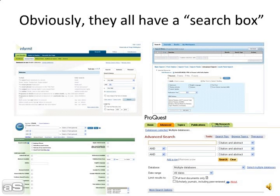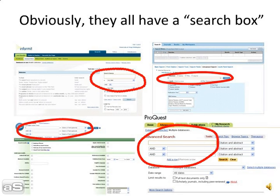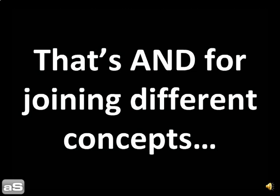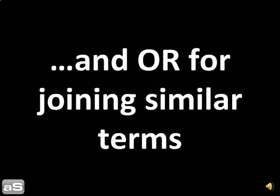Obviously, they all have a search box. Most have multiple boxes joined by AND and OR — AND for joining together different concepts, and OR for joining together similar terms.